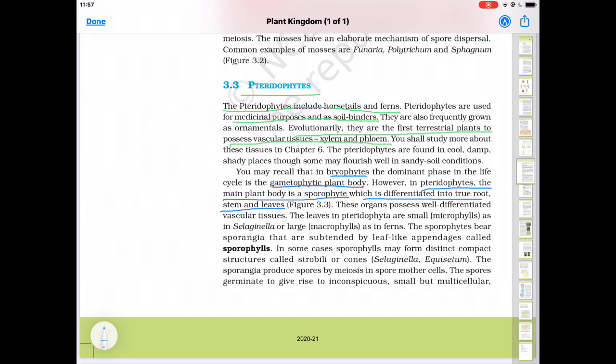The leaves in pteridophyte are small when they are small in size they are known as microphylls as in Selaginella shown in figure 3.3a diagram. The leaves are small in Selaginella and known as microphylls and sometimes large in size known as macrophylls as in fern shown in figure 3.3c.